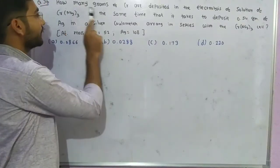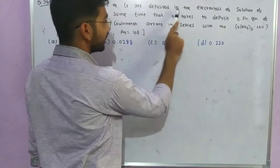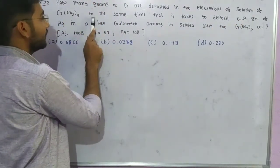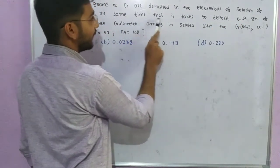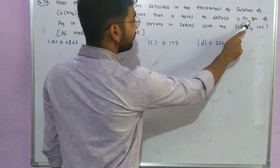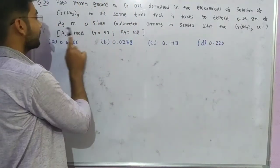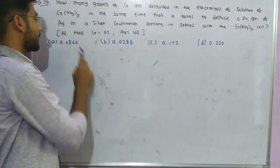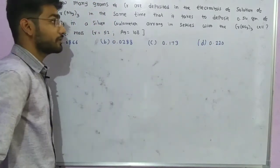Here is the question: How many grams of chromium are deposited in the electrolysis of a chromium nitrate solution in the same time it takes to deposit 0.54 grams of silver in a silver coulometer arranged in series with the chromium nitrate cell? Atomic mass of chromium is 52 and silver is 108.